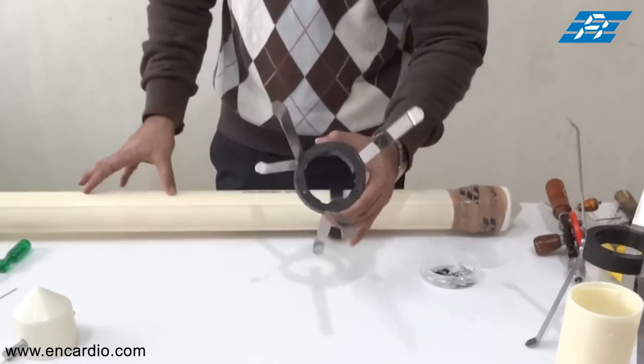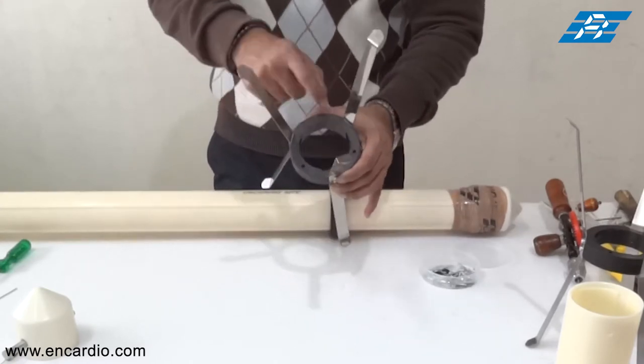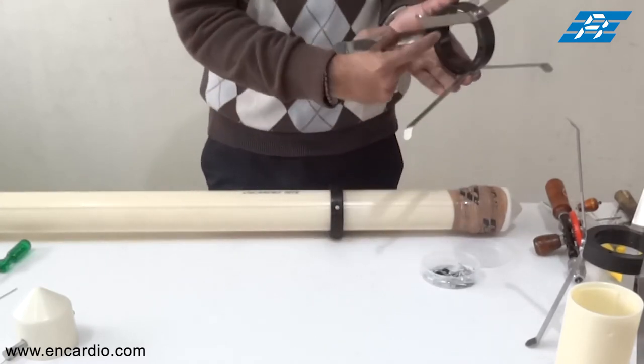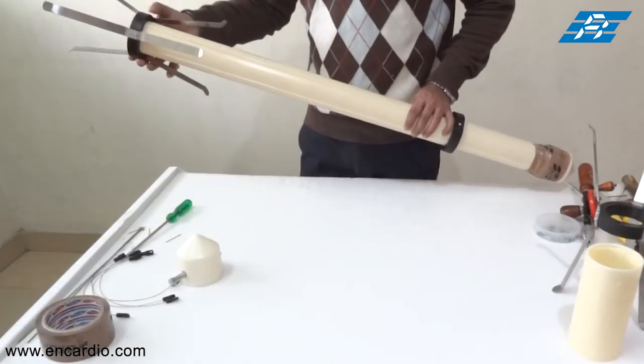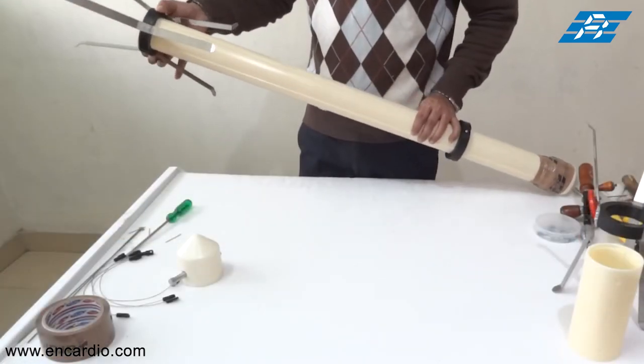Now the spider magnet will be installed. The visible magnetic coil side will be pointed downwards. Slide the spider magnet to the desired level.